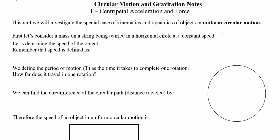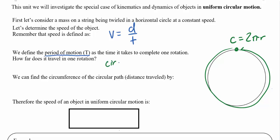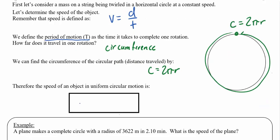Imagine you've got an object — a mass on a string — and you're spinning it around a horizontal circle above your head at a constant speed. Speed is simply distance traveled in a certain amount of time. In circular motion, we focus on the period T, which is the time to complete one revolution. The distance traveled in that time is the circumference, 2πr. So the speed of an object in uniform circular motion is v = 2πr / T.